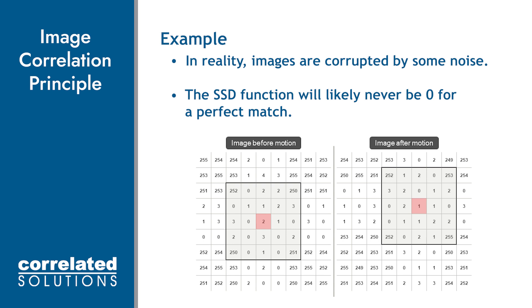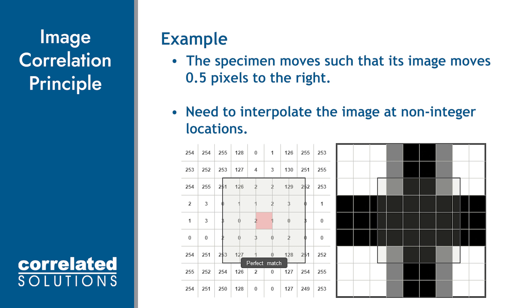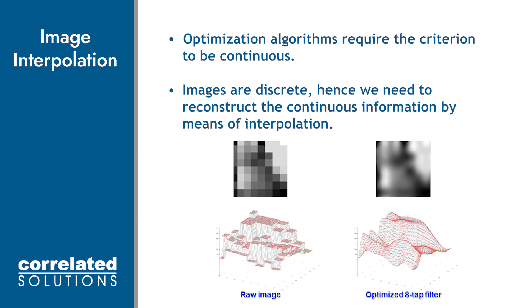In reality, we are looking to minimize the correlation function rather than find a match of 0, because the images will always have some noise associated with them. Since we can't expect the test specimen to move in pixel increments, we do interpolate the image for non-integer locations. Correlation algorithms use gray level interpolation representing a field of discrete gray levels as a continuous spline. By default, an 8-tap spline is used because it typically results in more accurate displacement information. However, lower splines may be selected in post-processing options which will result in a very slightly faster correlation.